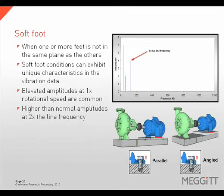Soft foot is a condition that occurs when one or more of the machine feet are not in the same plane as the others. Soft foot will create an elevated 1 times rotational speed vibration and a higher than normal amplitude at 2 times line frequency if it is on a motor. This elevation in 2 times line frequency is created when the soft foot is tightened and the foot pulls on the case, creating case distortion.